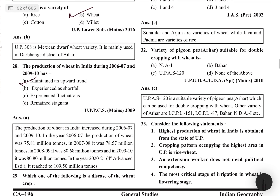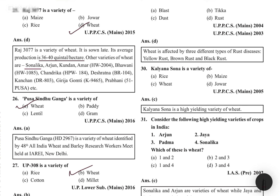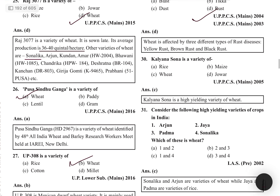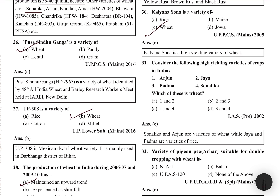MCQ: Which is a disease of wheat crop? Rust is a disease of wheat crop — including yellow rust, brown rust, and black rust. Kalyan Sona is a variety of wheat, like Sonalika and Sabarmati. Tip: if a variety name contains 'sona' (gold), there is a possibility it is a wheat variety, since wheat has a golden colour.